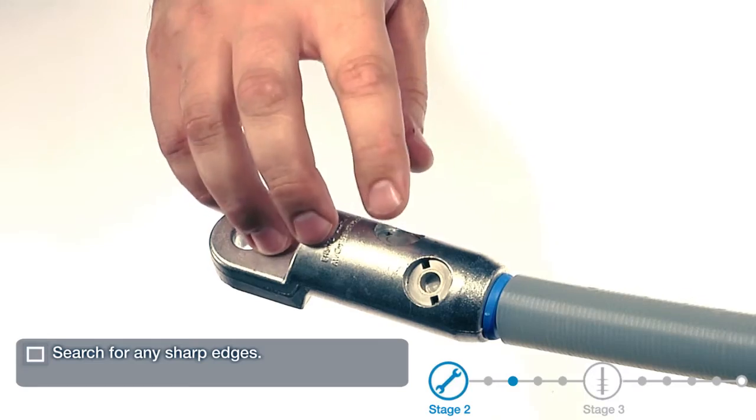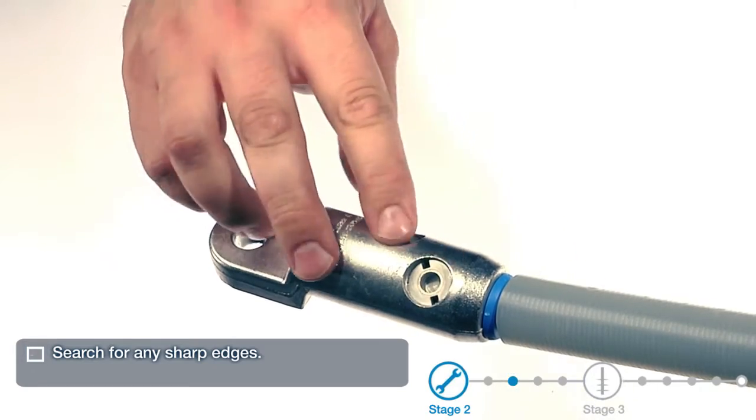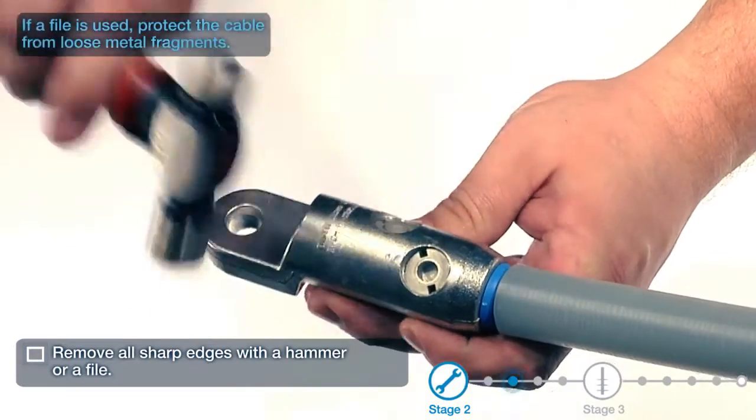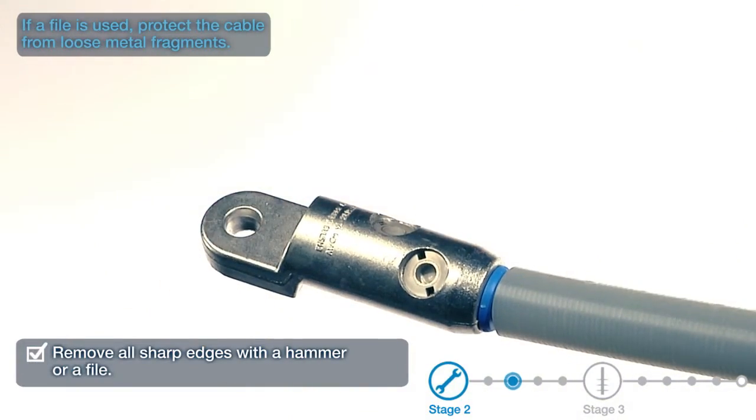Search for any sharp edges. Remove all sharp edges with a hammer or a file. If a file is used, protect the cable from loose metal fragments.